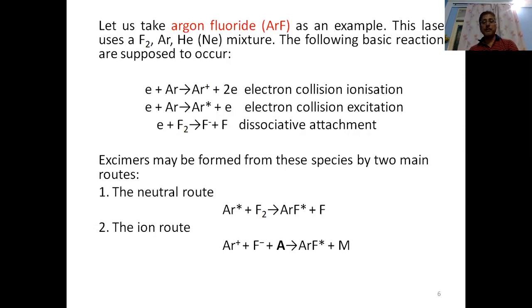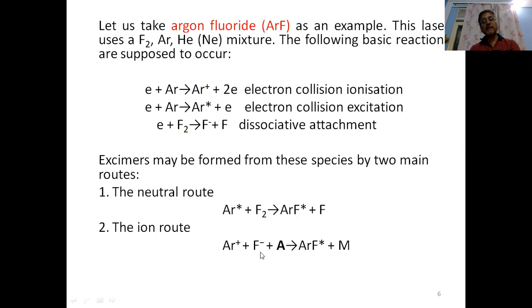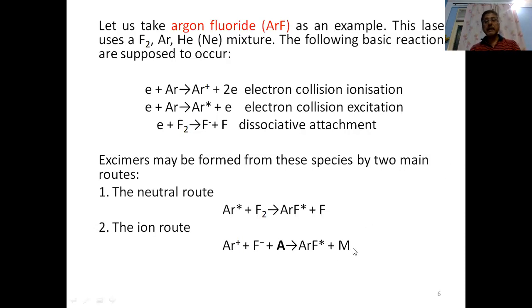The excimers may be formed from these species by two main routes. One is the neutral route, in which excited argon reacts with fluorine to give excited argon fluoride plus one fluorine atom. Through the ionic route, argon-plus reacts with fluorine-minus and a third body A — which is helium or neon — to give the excited argon fluoride compound, with A left over.